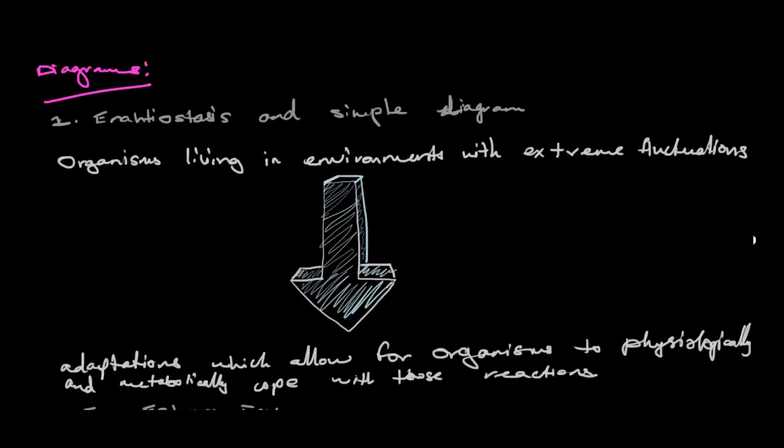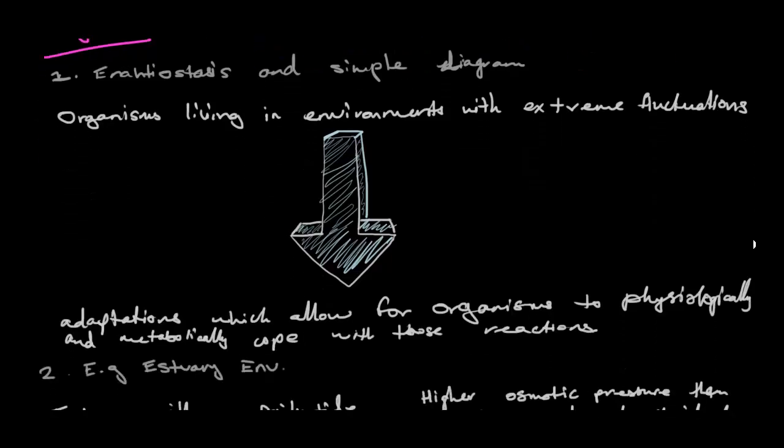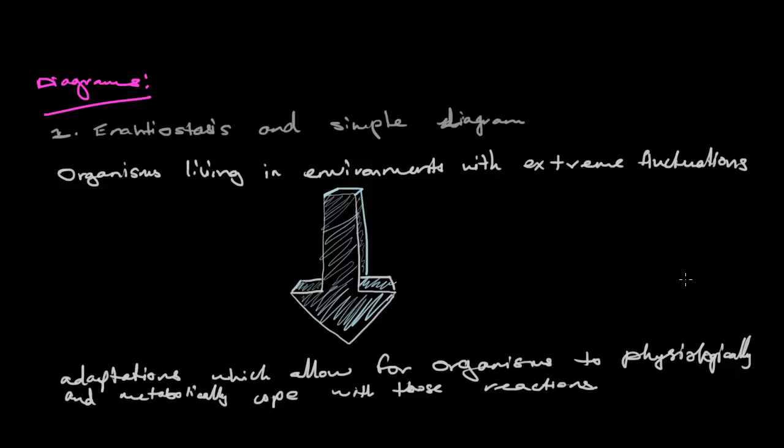This is the first diagram. It's about enantiostasis and how it basically works. Suppose we have an organism living in environments with extreme fluctuations. In enantiostasis, adaptations which allow the organism to physiologically and metabolically cope with these reactions are present. That's what enantiostasis is — these adaptations which allow organisms to physiologically and metabolically cope with these reactions.